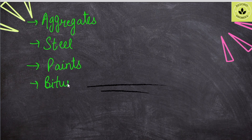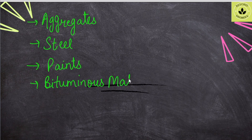Another important topic is bitumen material. This is our highway point — we also have highway material. If we cover this topic, we are going to cover two subjects at once, because if you study bitumen material here, it will also serve as a topic for highway material.